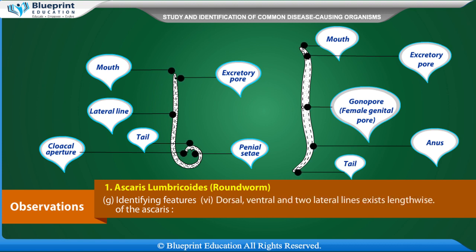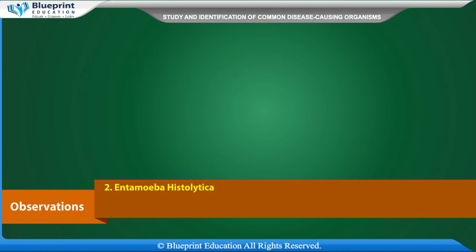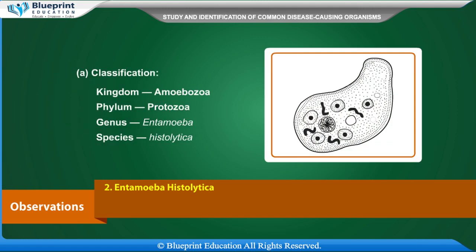Dorsal, ventral and two lateral lines exist lengthwise. Entamoeba histolytica: Classification — Kingdom Amoebozoa, Phylum Protozoa, Genus Entamoeba, Species Histolytica.